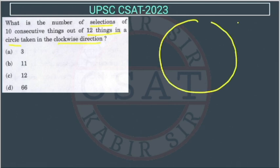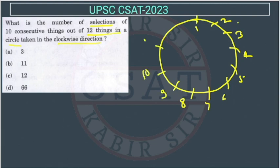So in a circle there are 12 things. This is 1, 2, 3, 4, 5, 6, 7, 8, 9, 10, 11, and 12. Out of these we have to select 10 and that should be consecutive.